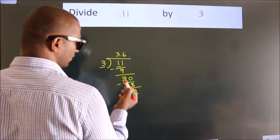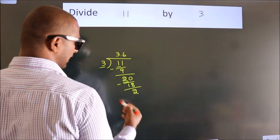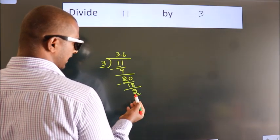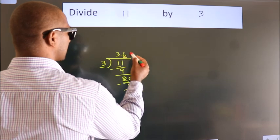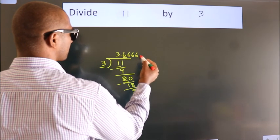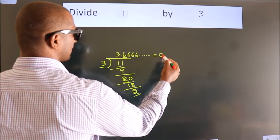We had 2 here, and we got 2 again. That means this number keeps on repeating. So this is our quotient.